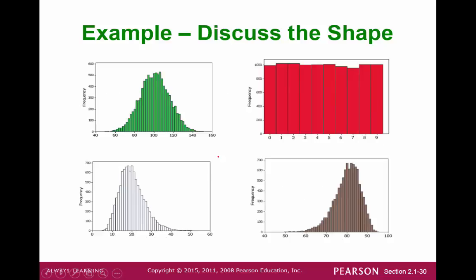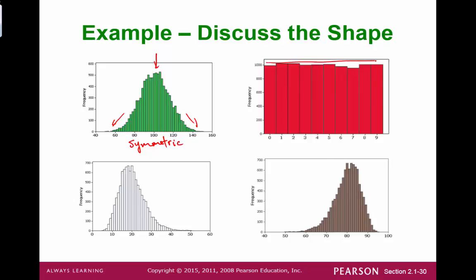Here are four graphs. We can try to figure out the general shape of each of these graphs. The first one has a high peak and it goes low on both sides pretty evenly, so I would say this is symmetric or bell shaped. Our next example has a fairly uniform distribution — when we see something like this where there are no real peaks, we call it a uniform distribution.